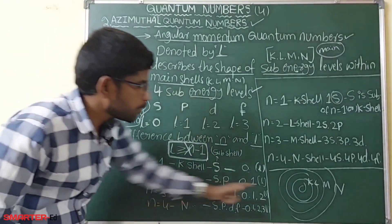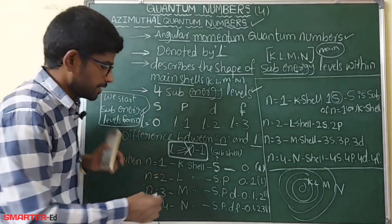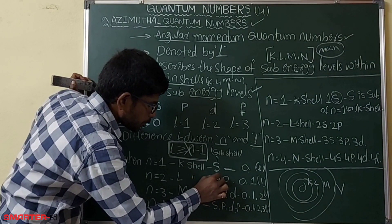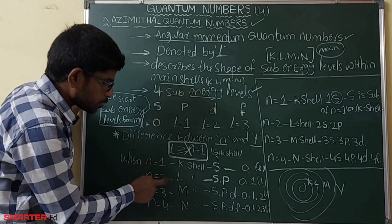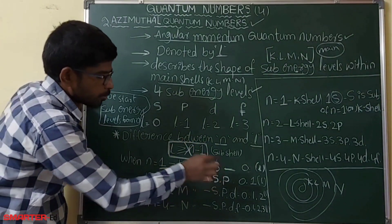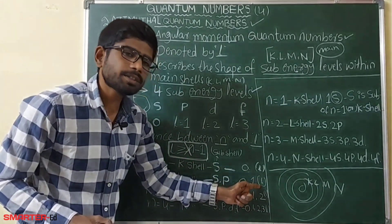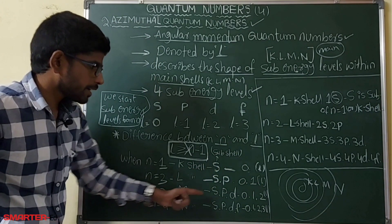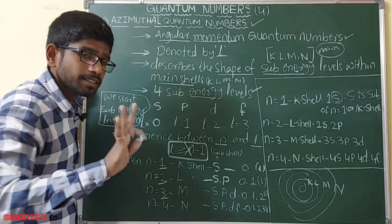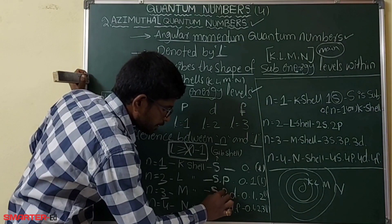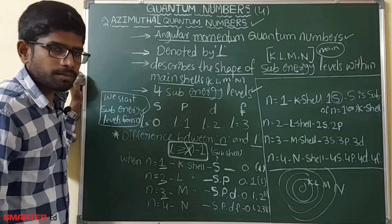When n equals 3, that is the M shell, and it has three sub-shells: s, p, and d, with l values 0, 1, and 2 respectively, according to the azimuthal quantum number.